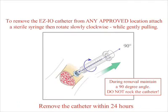Once you've completed use of the EZIO catheter, it'll be time to remove it. To remove the EZIO catheter from any approved location, attach a sterile syringe, then rotate slowly clockwise while you gently pull. During the removal process, maintain a 90-degree angle and don't rock the catheter. Ensuring that you remove the catheter within 24 hours will help to avoid any unnecessary complications.